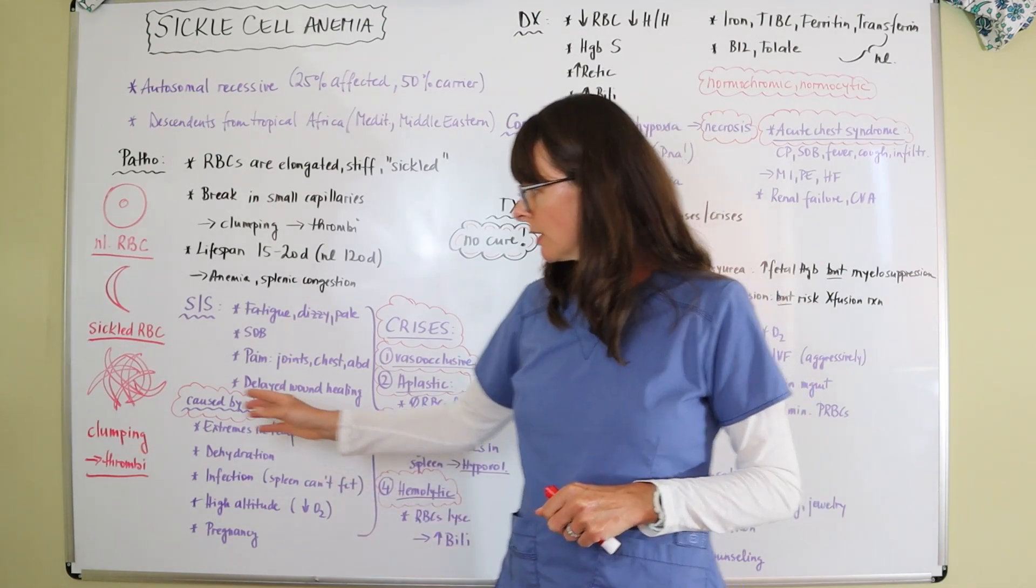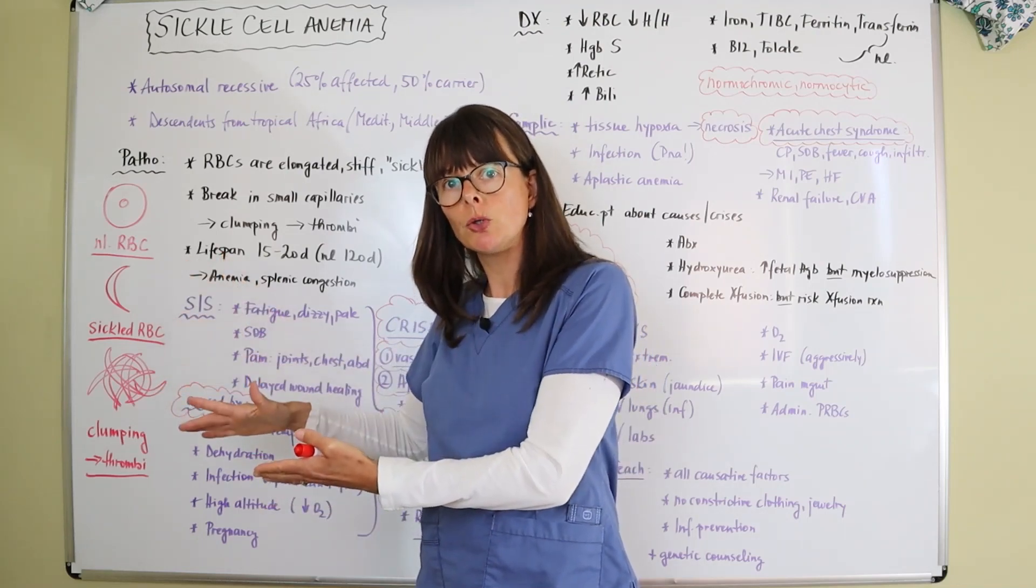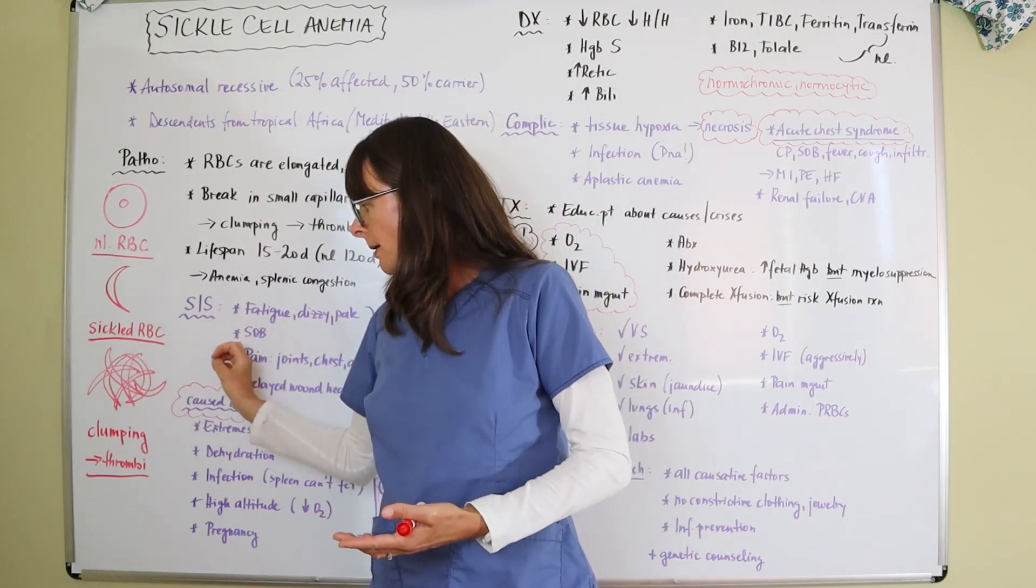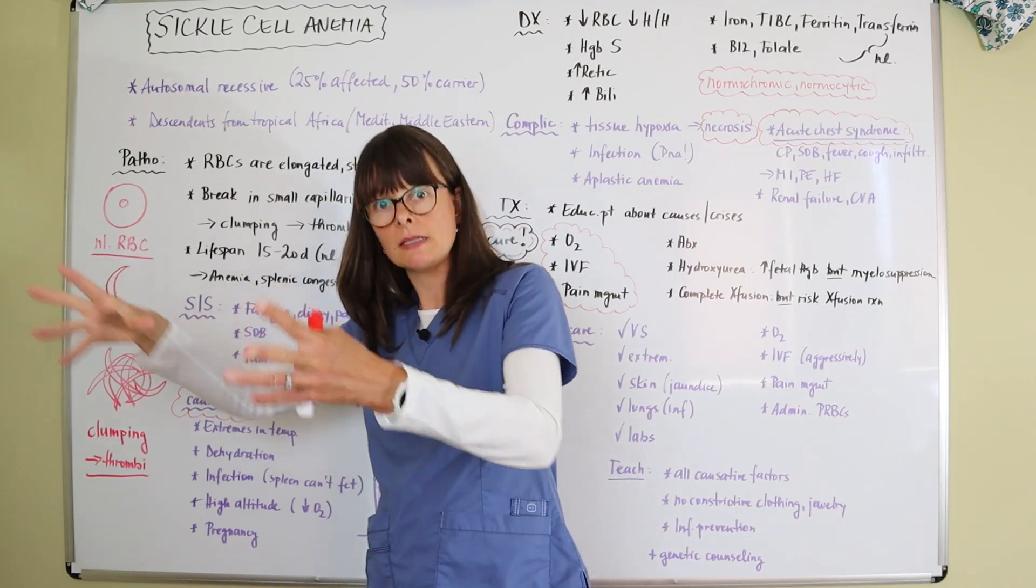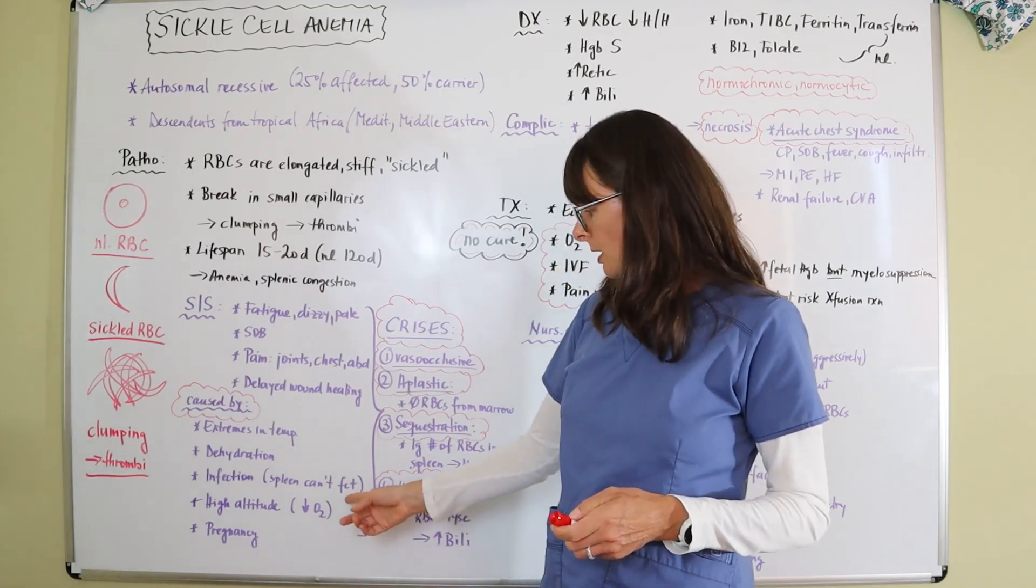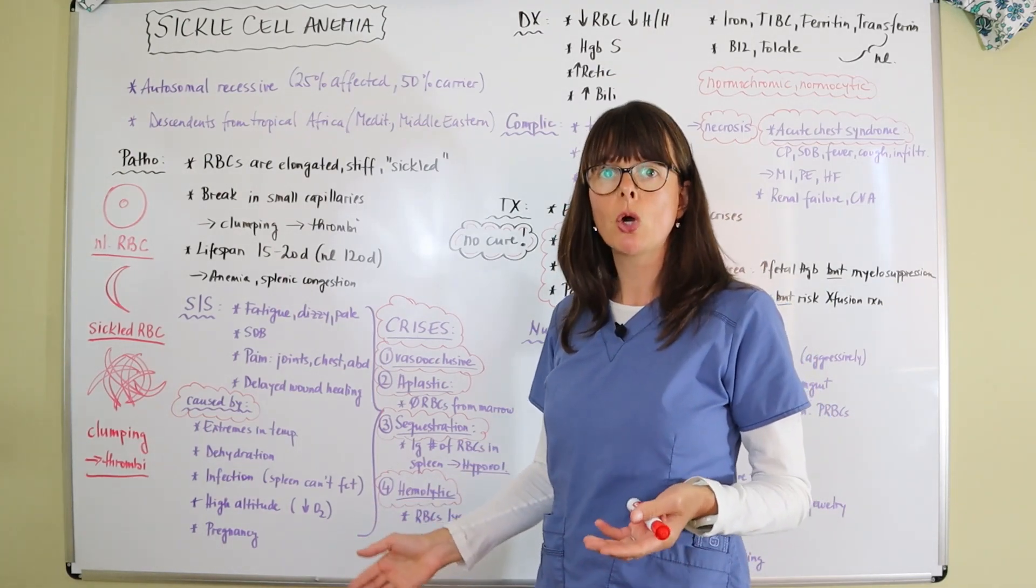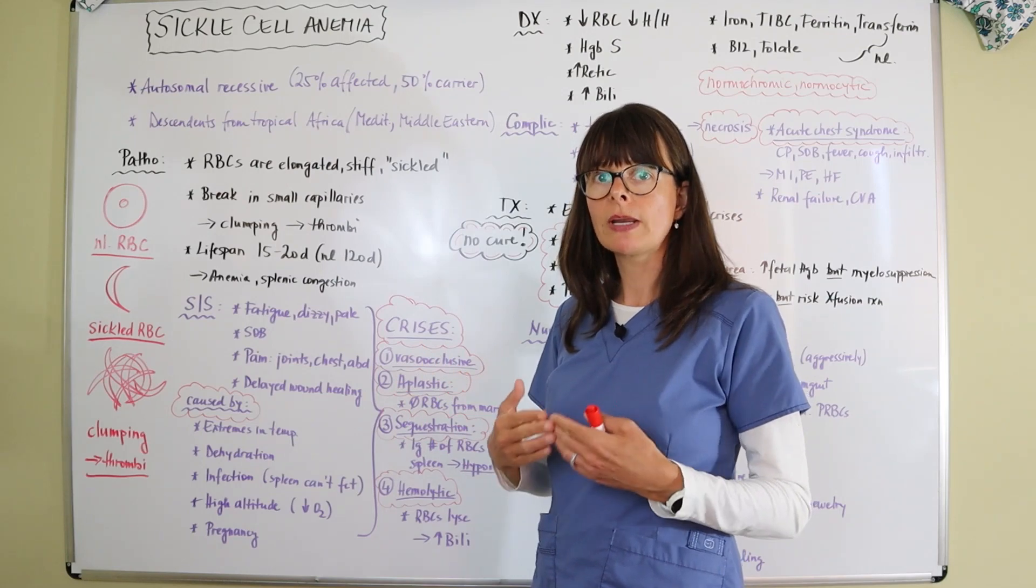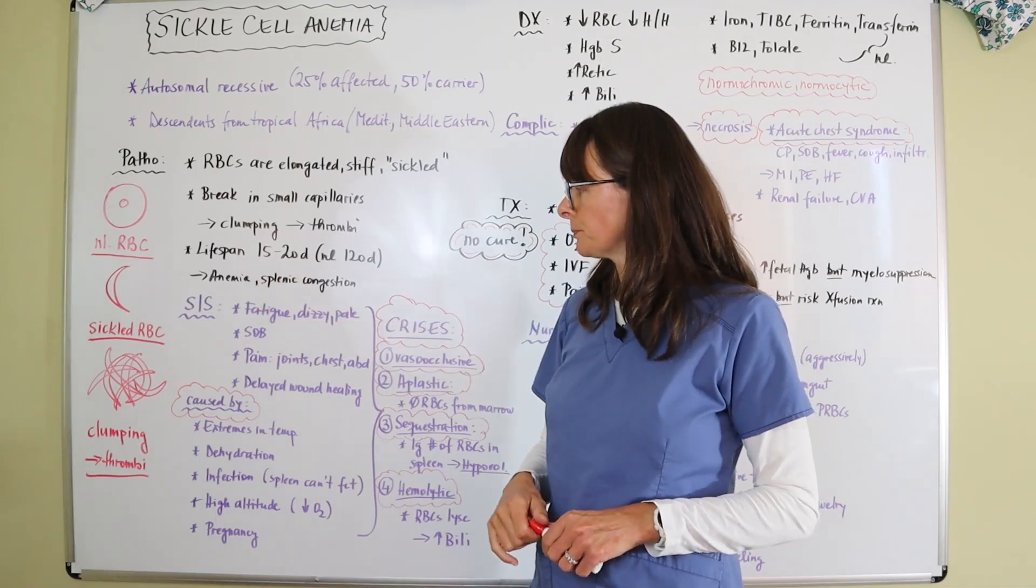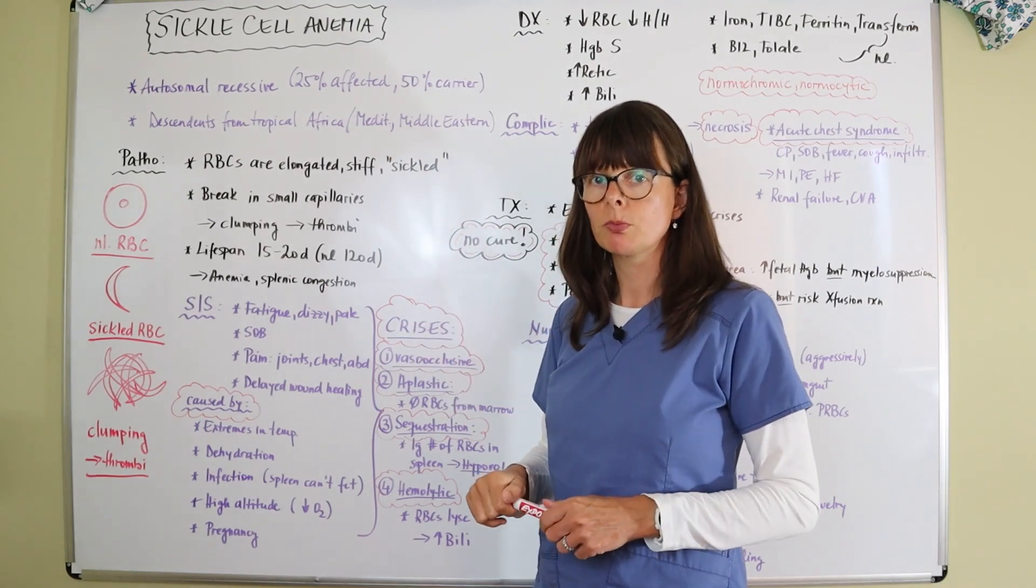Dehydration, because now think about if we have a clump of these clusters here and then we're dehydrated, we don't have enough volume of intracellular fluid flushing by here, there's less of a chance of that clump of cells to be carried away and dissolved. And then infection, because the spleen that plays a huge function in the immune system can't function because it is congested. And then high altitude, because we already know that we have lower oxygen in high altitudes. So if we already have low oxygen carrying capacity, in higher altitudes it's even going to be more exacerbated.